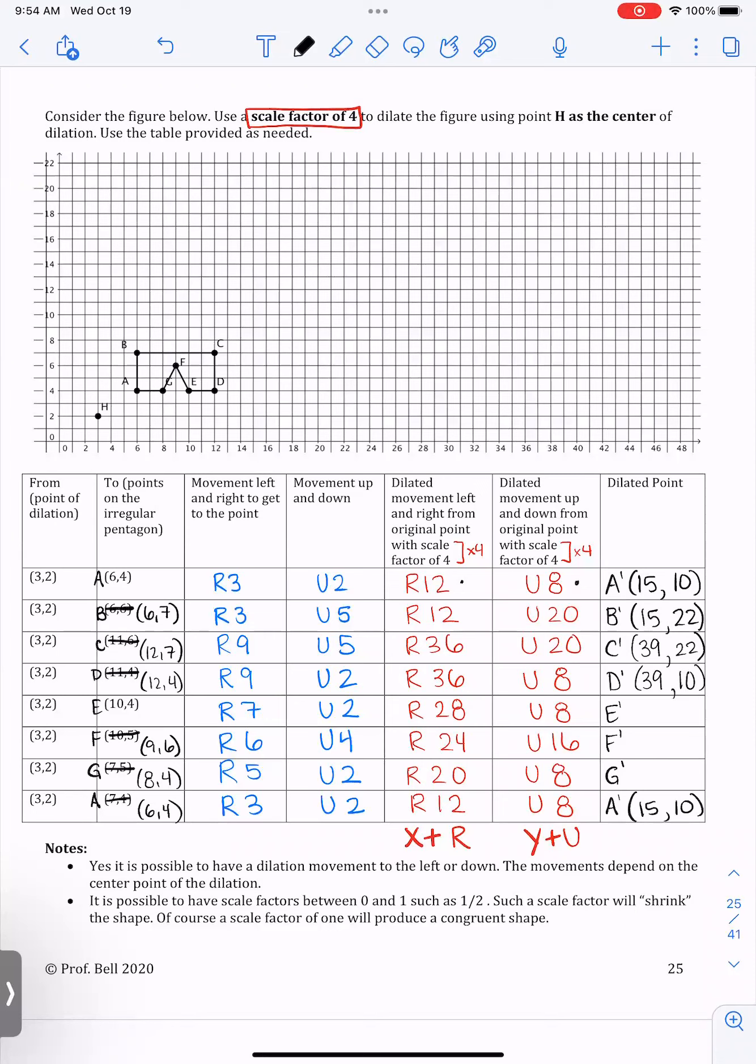So remember, I'm taking the point of dilation and I'm adding however far I moved to the right and then adding how I moved up to the y value. So the right part goes to the x and the up part goes to the y value. So one more, we're at 3 plus 28 is 31 comma 10.